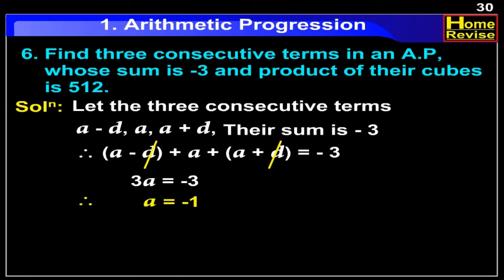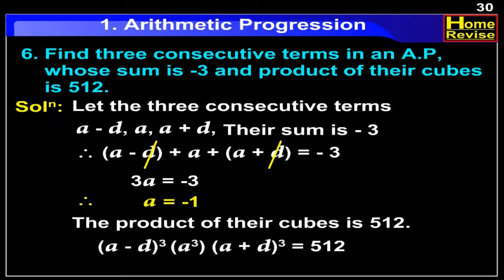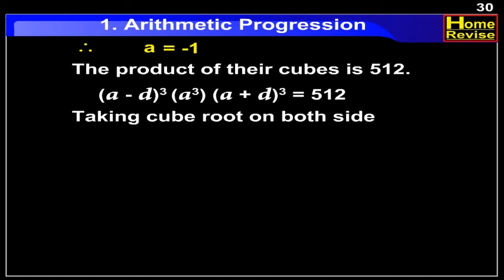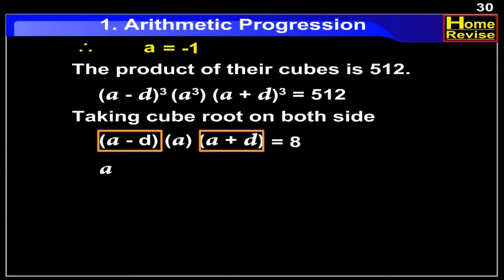Further, it is also given that the product of the cubes is 512. Hence, (A minus D)³ into A³ into (A plus D)³ is equal to 512. Taking cube root on both sides, we get (A minus D) into A into (A plus D) is equal to 8. Using the formula (A minus B)(A plus B) equals A square minus B square, we have A into (A square minus D square) is equal to 8.